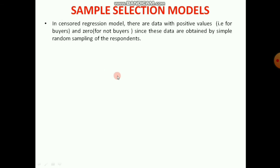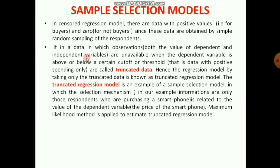An important related part of the Tobit model is the sample selection model, which can be analyzed from two angles: the truncated regression model, and Heckman's two-stage estimation. In a censored regression model there are data with positive values for buyers and zero for non-buyers, obtained by simple random sampling. In truncated data, observations where both the dependent and independent variables are unobservable when the dependent variable is below the cutoff are entirely excluded — only data with positive spending are retained. Regression using only this truncated data is called the truncated regression model.